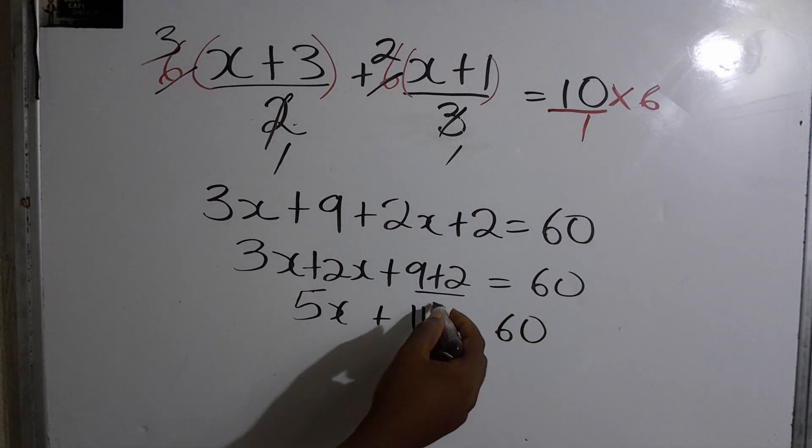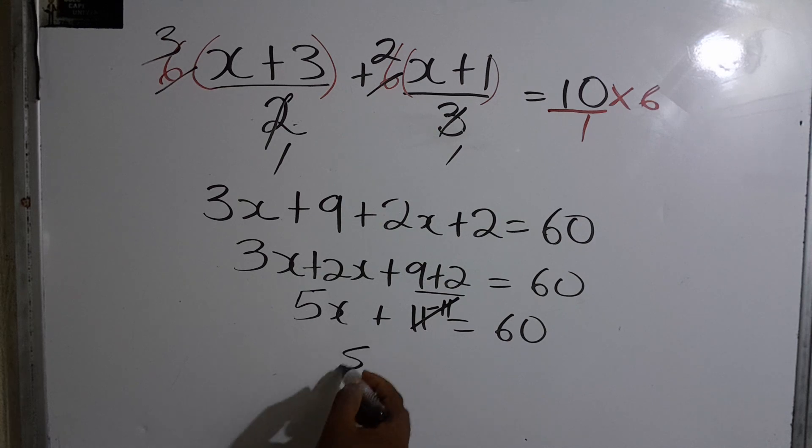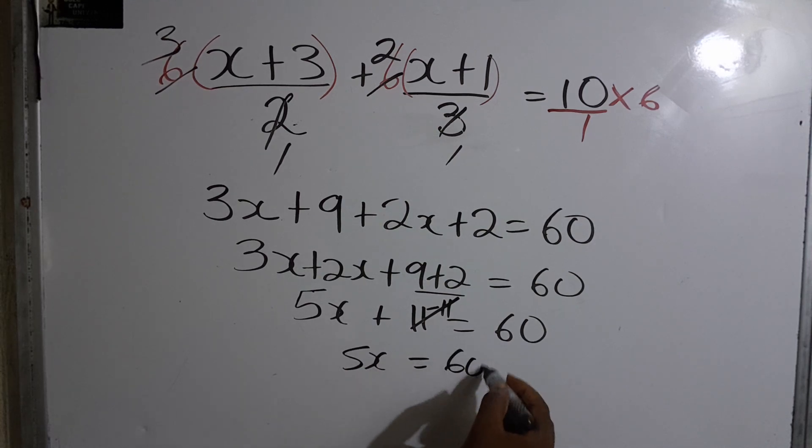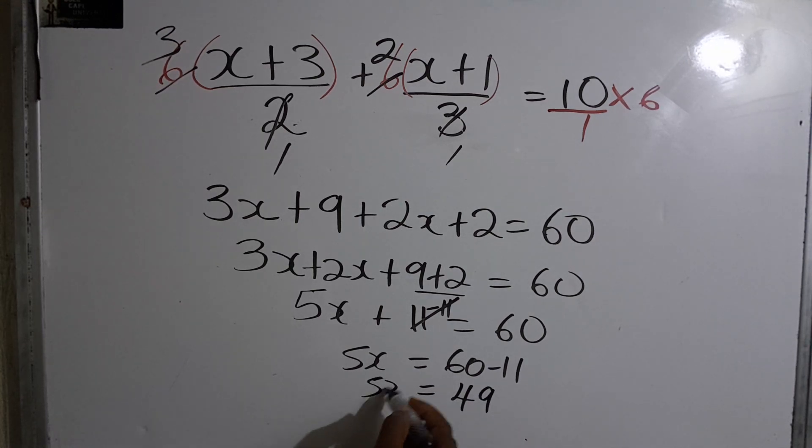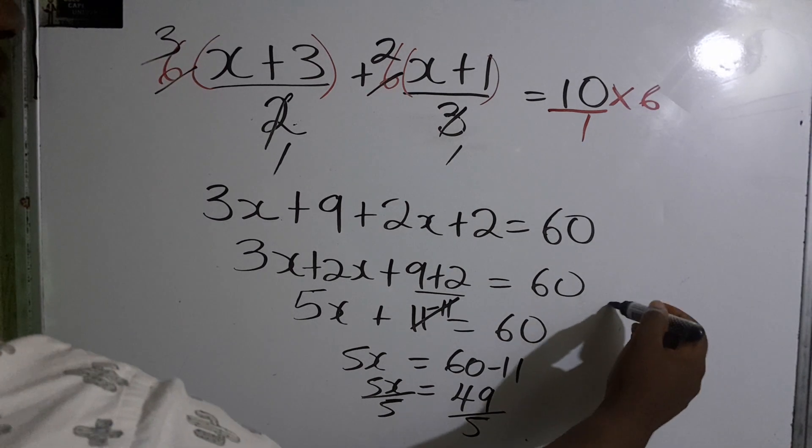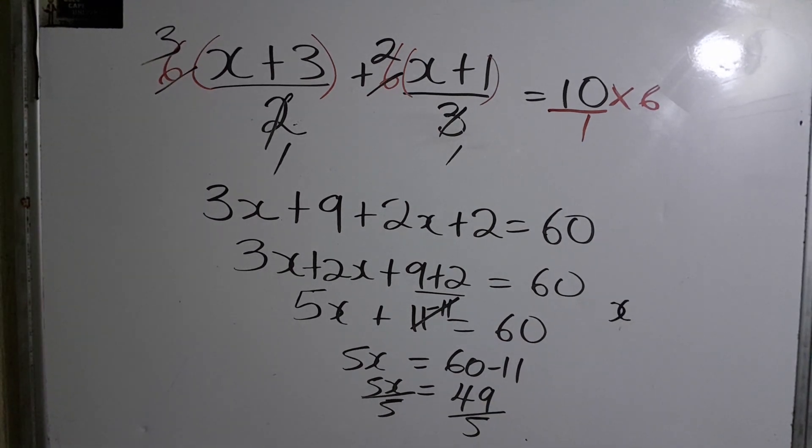And to solve, we minus 11 from both sides. So this now is 60 minus 11, which is equal to 49. So it will be 5x over 49.